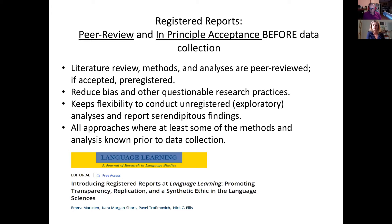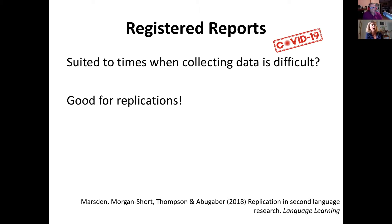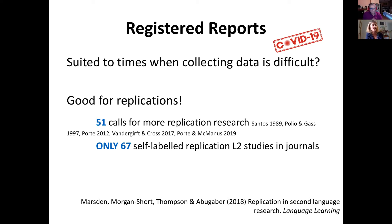Registered reports may be particularly suited to times when collecting data is difficult, like during COVID-19. You can plan the study, think about a theoretical framework and instrumentation, and submit a stage-one manuscript. Then when things become easier, you can collect the data — including online data collection which is becoming more common. Registered reports are also particularly good for replications, and the field badly needs replications. There have been many calls — 51 calls for replication recorded.